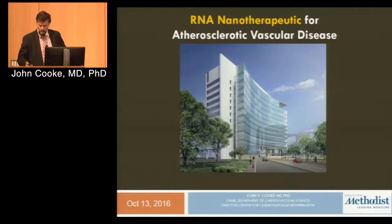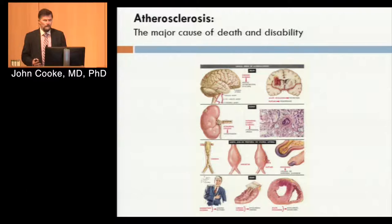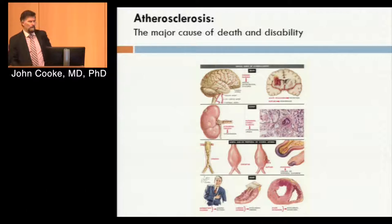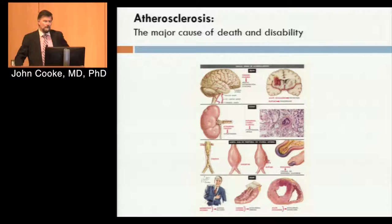What we're here to talk about is the major cause of death and disability in the world. I was going to say the Western world, but increasingly, even in emerging countries, atherosclerosis is a major cause of death and disability, causing stroke, heart attack, aneurysms, and renal failure. All of these things are related to this process of atherosclerosis.